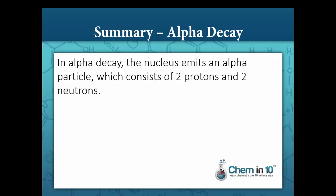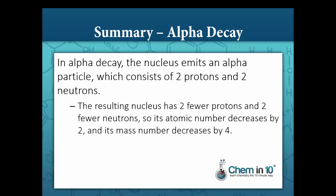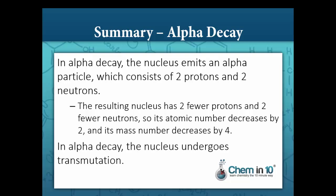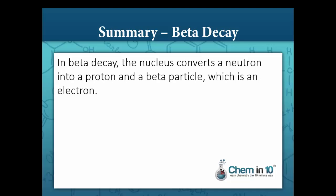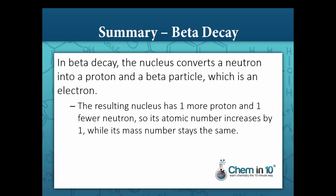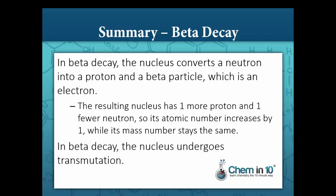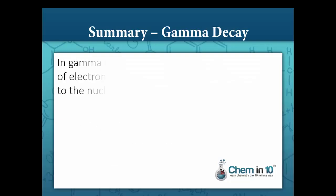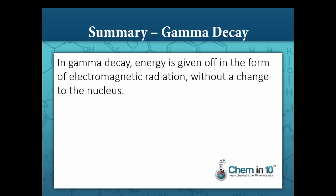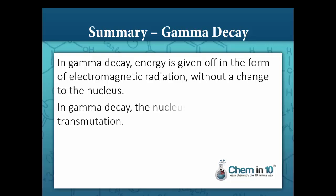Let's summarize what we've learned. In alpha decay, the nucleus emits an alpha particle consisting of two protons and two neutrons; the atomic number decreases by 2 and the mass number decreases by 4, resulting in transmutation. In beta decay, the nucleus converts a neutron into a proton and a beta particle; the atomic number increases by 1 while the mass number stays the same, also resulting in transmutation. In gamma decay, energy is given off as electromagnetic radiation without a change to the nucleus, so no transmutation occurs.